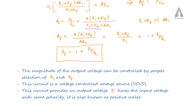The magnitude of the output voltage can be controlled by proper selection of R1 and RF. This circuit is a voltage-controlled voltage source and provides an output voltage that is k times the input voltage with the same polarity — that is, a positive scalar multiple. The gain of this closed-loop configuration will always be greater than 1, because the term RF divided by R1 can never be negative.